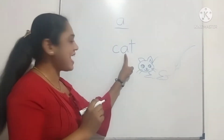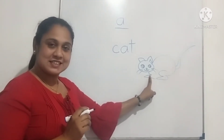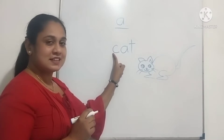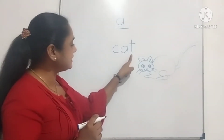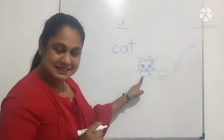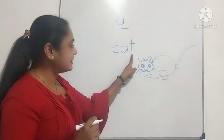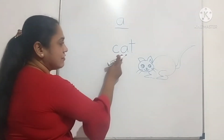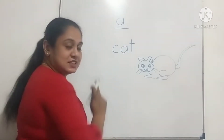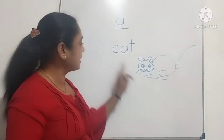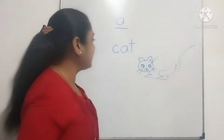K, A, T — Cat. Say it again. K, A, T — Cat. Again. K, A, T — Cat. Now, how do we make three-letter words? We make three-letter words. Do you understand? Right. Next.